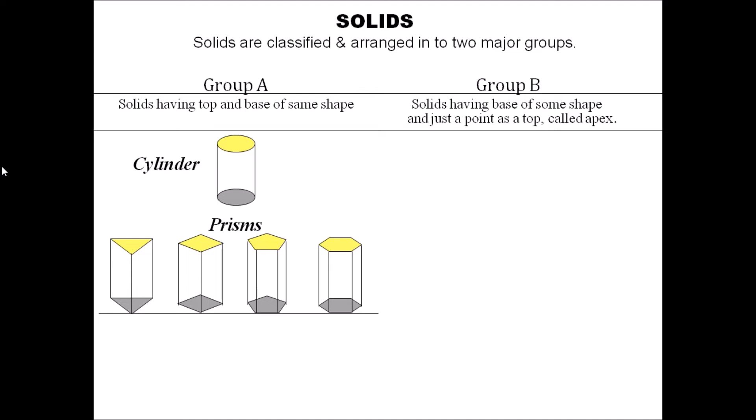Similar one for pentagon and hexagon. If these edges are equal, all these edges are equal, then we get cube. Cube is a solid which will have six square faces, just like the case of dice which you have seen.